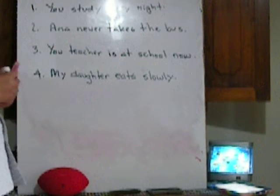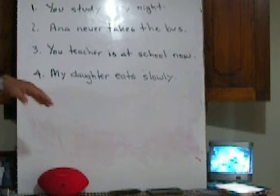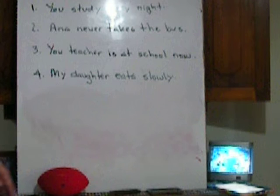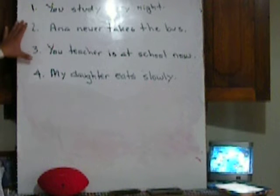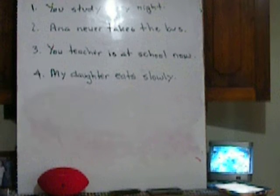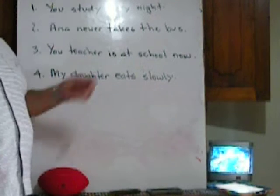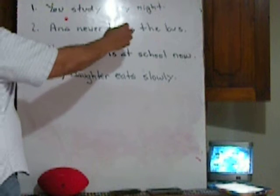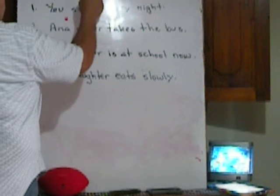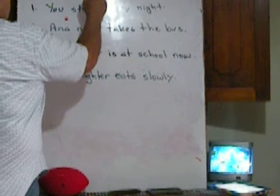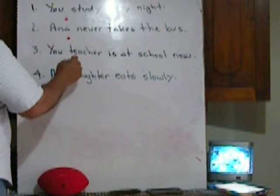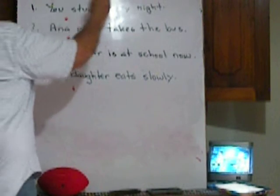We have four sentences right here. I'm going to ask you to please take note of these on your notebook. Please press pause right now and take note of these four sentences. You have to write under each one which one is the adverb — remember, you have to circle the adverb — and then write down if it's an adverb of time or manner.